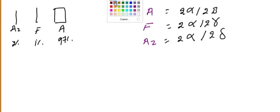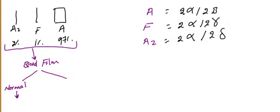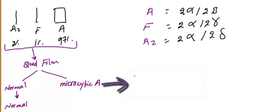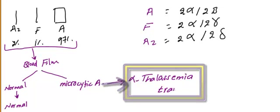A normal hemoglobin electrophoresis result means the next step is to look at the blood film. If the blood film shows no abnormal cells, it is truly normal. However, if the blood film shows microcytic anemia, that means it is alpha thalassemia trait.